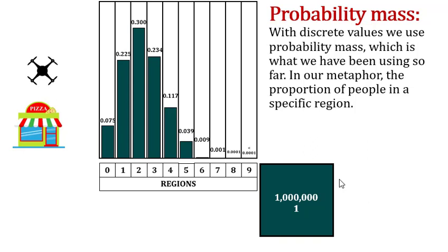When we use variables with discrete values we can assign a probability to each of those values, and technically that is the probability mass of that value. When we use probability mass, typically we don't say 'mass' — we just say 'probability,' and that's what we've been doing so far. In this case we've got a city with 10 regions, with very clearly defined regions, and the name of each region is a number that goes from 0 to 9. The probability mass is the proportion of people in that region.